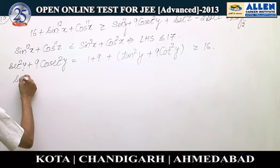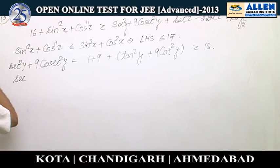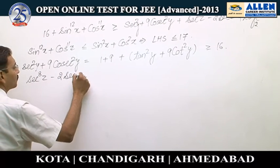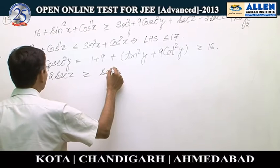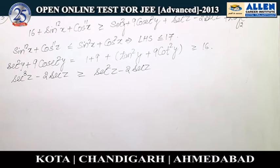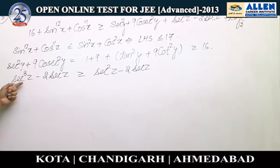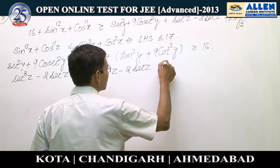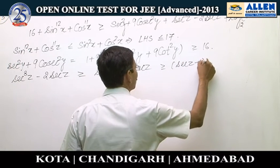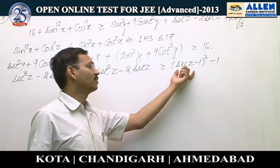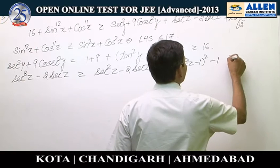The second term on the right hand side is sec z raised to the power 8 minus 2 sec z. Sec z is greater than or equal to 1, and raising to a higher power gives a larger value. We can add and subtract 1 to write this as (sec z minus 1) whole squared minus 1. The least value of this perfect square expression is 0, so the least value of the full expression is minus 1.